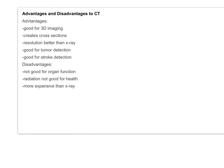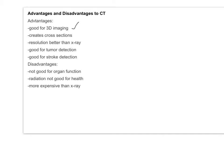CT scans are good for 3D imaging. They give you cross-sections so you can see really deep into an area. The resolution is much better than for x-rays — you get a lot more detail. You can even use them for tumour detection: tumours show up as areas of increased density, and you can spot them by identifying different density areas. Also for stroke detection, because it shows density increases in certain parts of the circulatory system. They don't tell you what's going on with organ function — again, it's a snapshot, not a film. Radiation is not good for health, and CT scans are more expensive than x-rays.